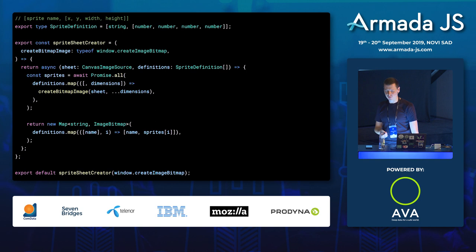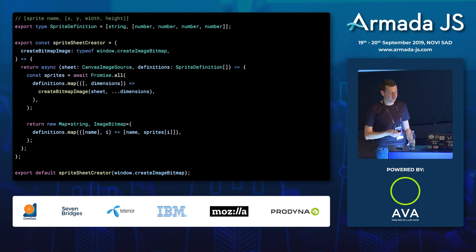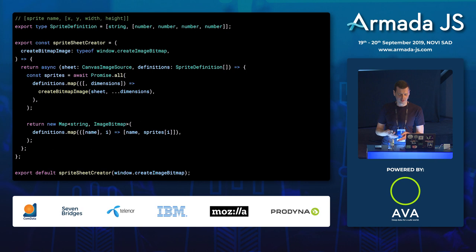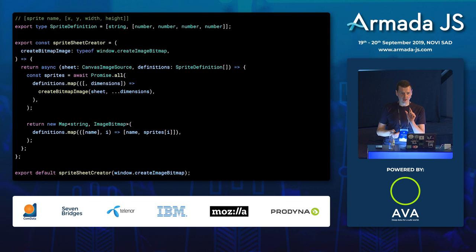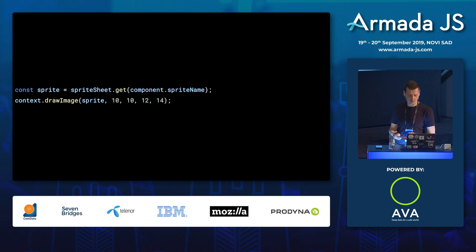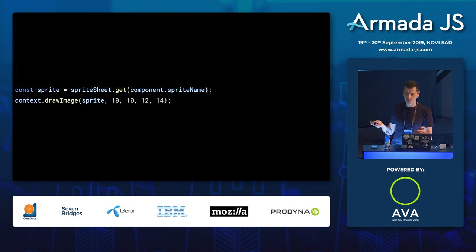To extract sprites, we use the createImageBitmap API. You have a type called CanvasImageSource which can be an HTML image element or bitmap data directly. What createImageBitmap lets you do is take an image, give it the dimensions, and it will create a new bitmap image for you. I'm abstracting this away for the user, and it returns a new map with the names you passed but with values resolving to actual bitmap data. To get a sprite, you call spriteSheet.get and use the canvas rendering context 2D's drawImage method to draw that sprite wherever you want in pixel space.